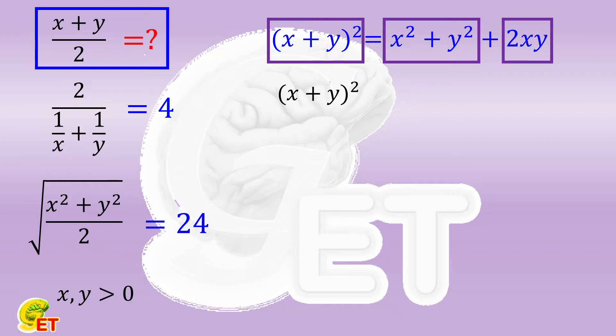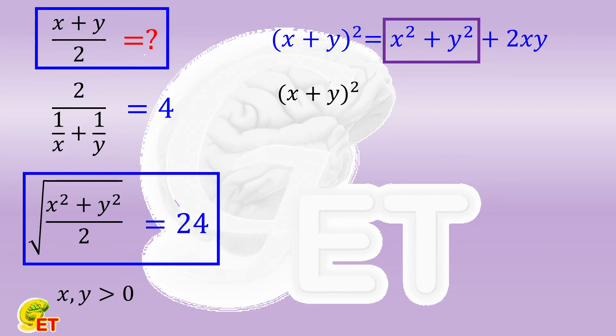To deal with the part of the square of x plus the square of y, we obviously need to start with the quadratic mean. The square of x plus the square of y equals 2 times the square of 24, which equals 1152.